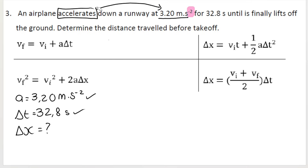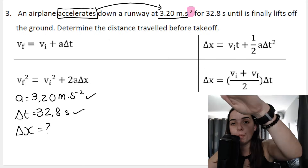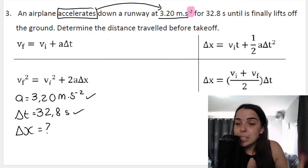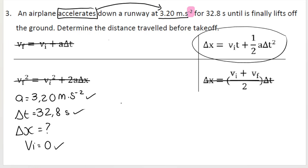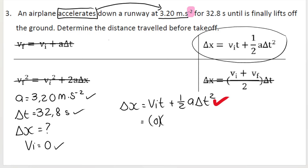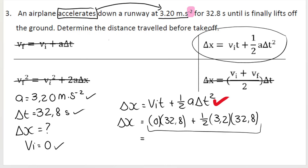However, there is such a thing as an implied variable. When an airplane is on a runway starting to accelerate, it starts from a velocity of zero — it's starting from rest. So we assume initial velocity VI equals zero. Now we have three out of four variables. I want to avoid equations using VF, so I'll use this formula. Write the blank formula first — you get a mark for that — then substitute in: VI = 0, t = 32.8 s, a = 3.2 m/s². Typing that in, I get 1721.34 meters.